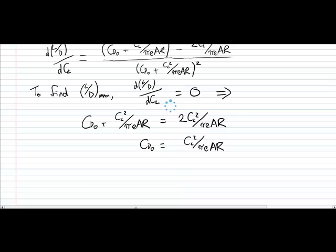So the value of CL at which you get a maximum lift drag ratio is simply CL, and this is going to be the square root of CD0 plus pi E AR. So this here is the value of CL at which the lift drag ratio is a maximum.